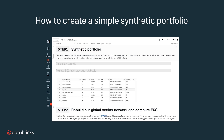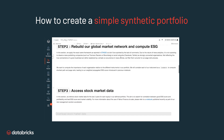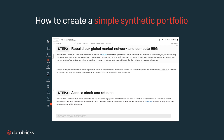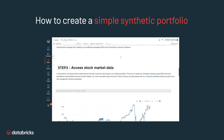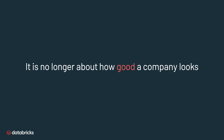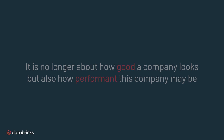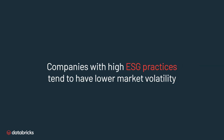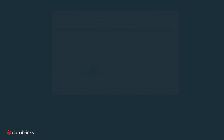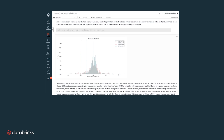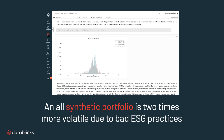In this example, we show you how to create a simple synthetic portfolio and tie those ESG insights within the market risk framework. It is no longer about how good a company looks, but also how performant this company may be, confirming what we know from research and literature that shows companies with high ESG practices tend to have lower market volatility. We show in the context of value at risk that an all-synthetic portfolio is two times more volatile due to bad ESG practices.